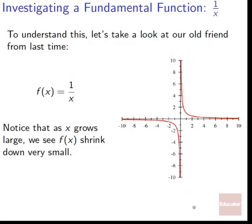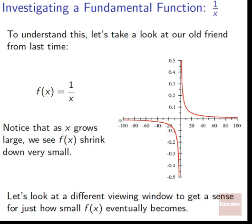To understand this, let's take a look at our old friend, the fundamental function 1 over x. Notice that as x grows large, we see f of x shrink down very small. As we go far out, we become very, very small — we can see we're at one-tenth and negative one-tenth. Expanding to a larger viewing window, by the time we've made it to 100, we're at one-hundredth and negative one-hundredth. So the farther we go out, this f of x is going to crush down to zero.